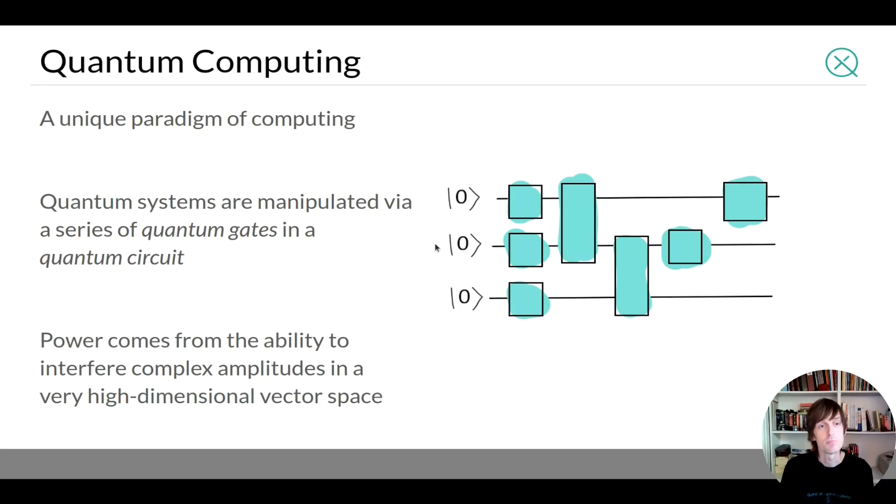So now we're talking about quantum computing and we want to connect that to deep learning. So very basically quantum computing, you have a set of quantum systems which are manipulated by a series of gates. We call this a quantum circuit. And the power of quantum computing comes from its inherent special ability to interfere complex amplitudes in a very high dimensional space. So it's not just the ability to work in a high dimensional space but it's actually the ability to do interference in that space.